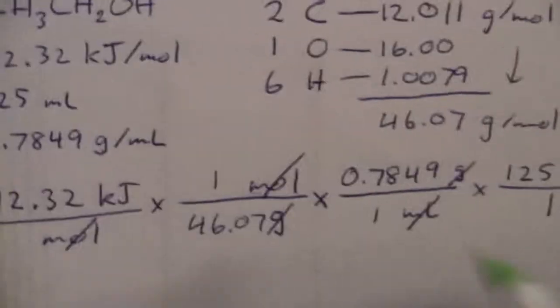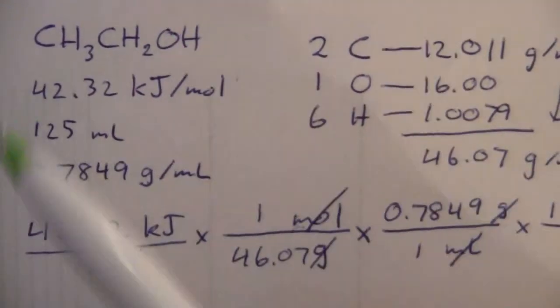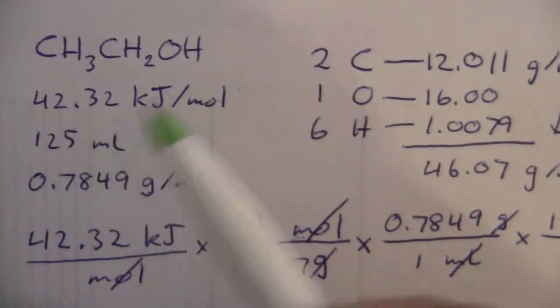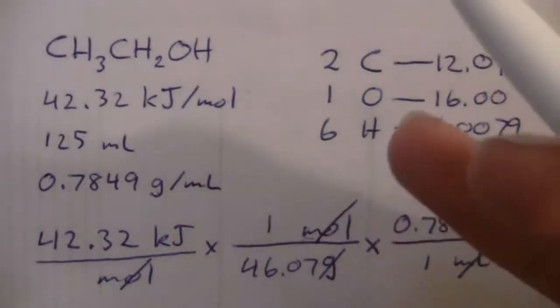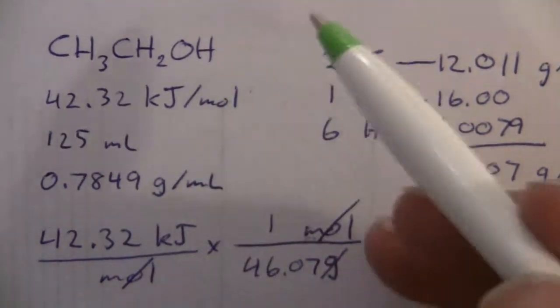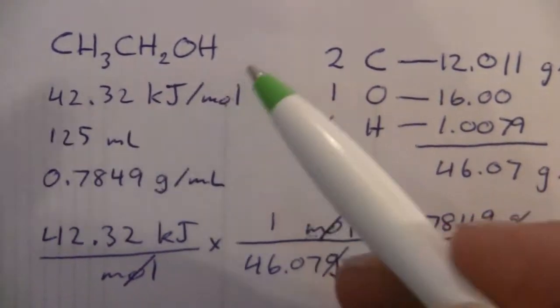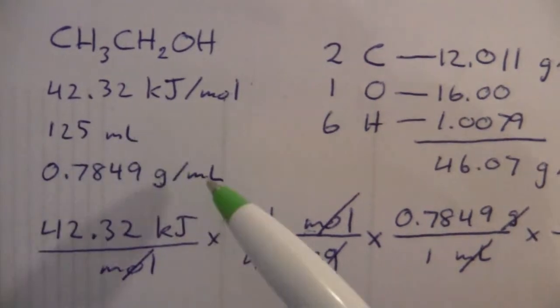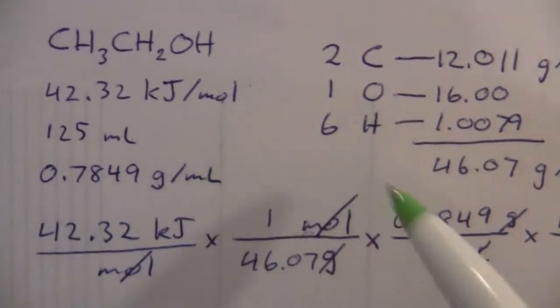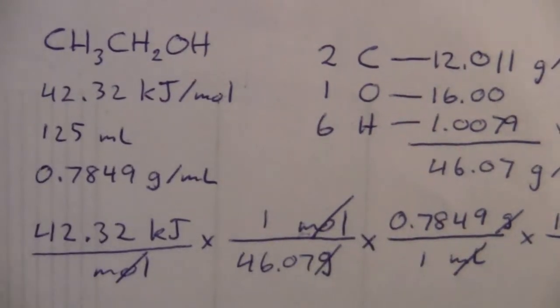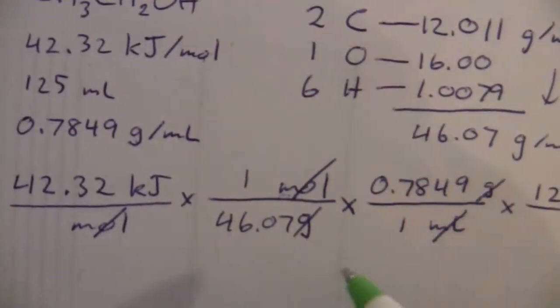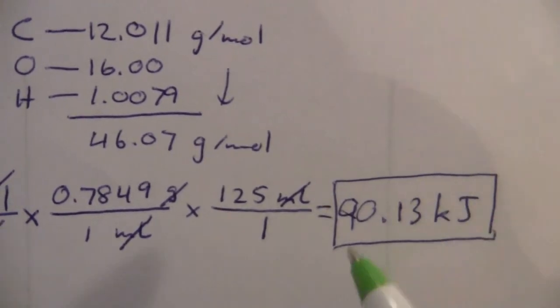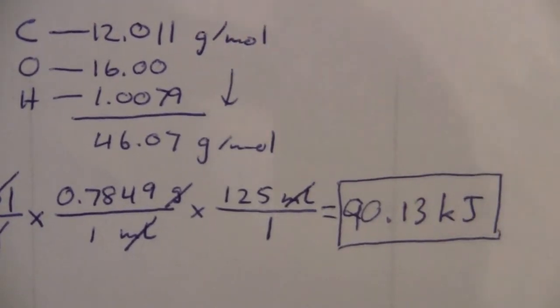So again, in these kind of problems, you're looking at the units of what you're given and what is the meaning. Kilojoules per mole means that many kilojoules are required to, and this is the enthalpy of vaporization, so that much is required to vaporize every mole. Then it's a matter of, well, how many moles do I have? I have so many milliliters, and I know there's so many grams per milliliter, and I can find out how many grams per mole there are. We use all that together and determine that this much energy is required to vaporize 125 milliliters of ethanol at 25 degrees.